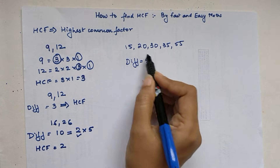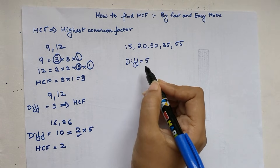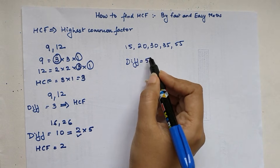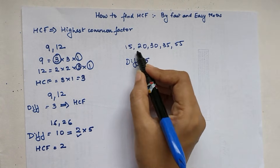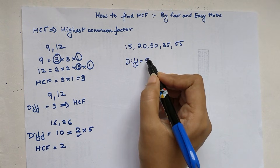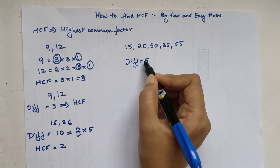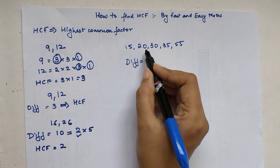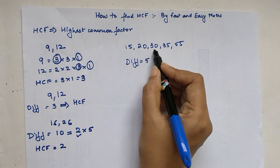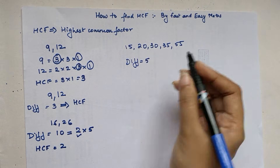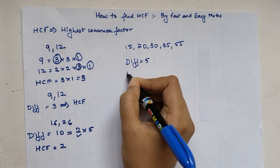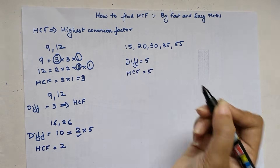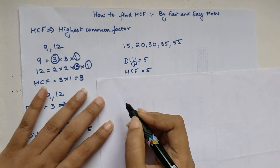We use the same method of checking whether this smallest difference is a factor of all the numbers. Yes — 5 is a factor of 15, 20, 30, 35, and 55. So my HCF here is 5.